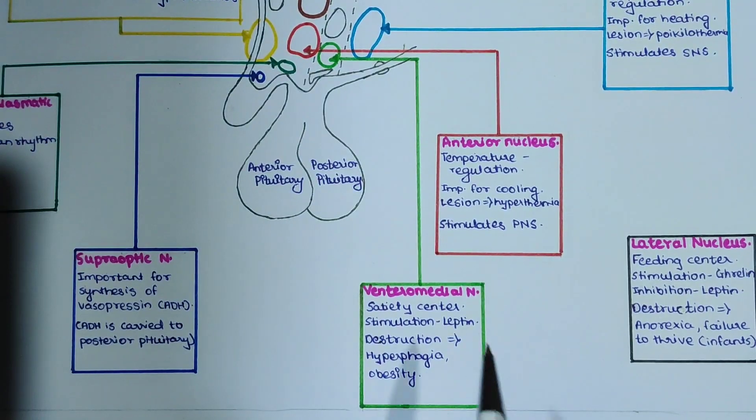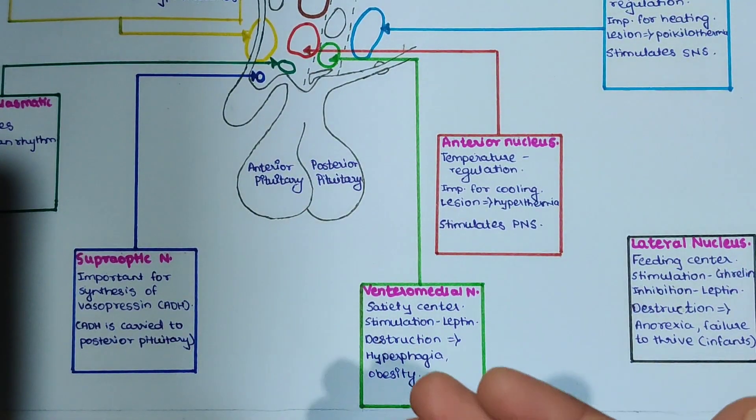Highlighted with light green color is our ventromedial nucleus. It is a satiety center and is stimulated by leptin. If there is destruction of this nucleus, it will lead to hyperphagia and obesity.